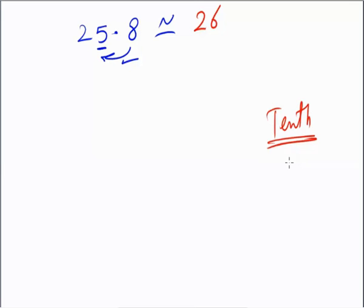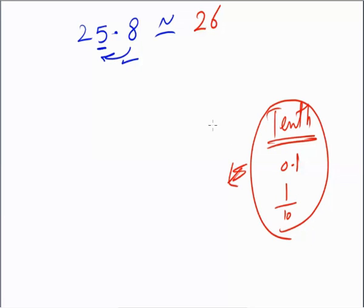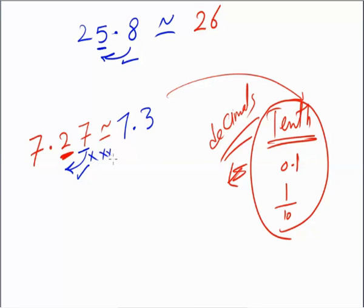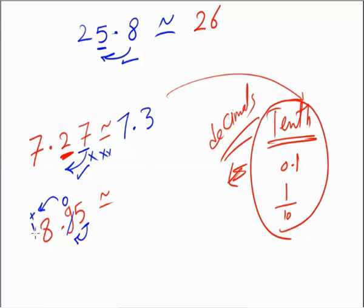Now approximate to the nearest tenth, which means the first digit after the decimal point (0.1). For example: 7.27 to the nearest tenth. The tenths place is 2, before it is 7 — seven gives — so 2 becomes 3. Answer: 7.3, cancel remaining digits. Another: 8.59 to the nearest tenth. The tenths digit is 5, before it is 9 — nine gives — so 5 becomes 6... carries to give 9.0 which equals 9. Thanks for watching, goodbye.